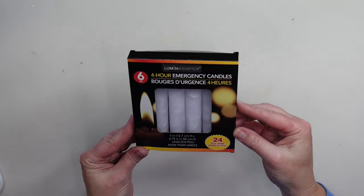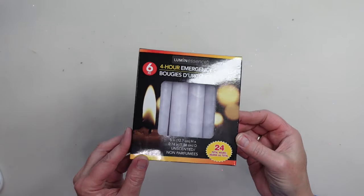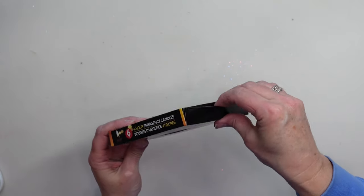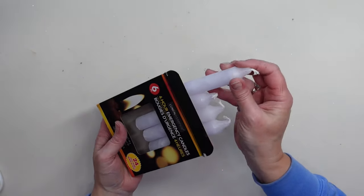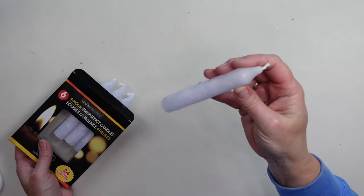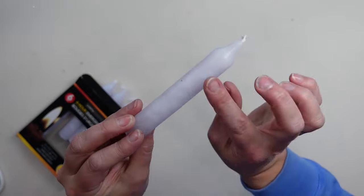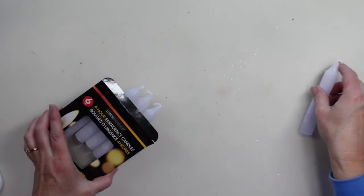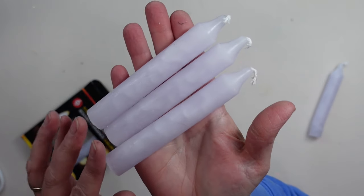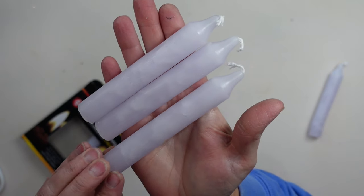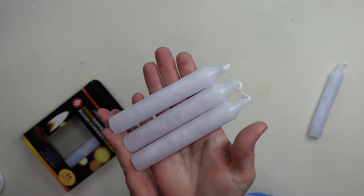For my candles, I am going to be using these 4-hour emergency candles. There's six in a package from Dollar Tree, and I really like these because they are the perfect length for those little candlesticks. But also, if you look real close, you can see kind of a little bit of a design in them, and it looks a little bit frosted. I think that gives it a more high-end look. So I'm going to be using these candles in my candlesticks.